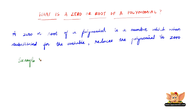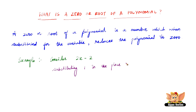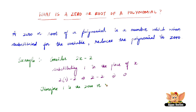For example, let us consider 2x minus 2. In this equation, x is the variable. Substituting 1 in the place of x, 2x minus 2 is reduced to zero. Therefore, 1 is the zero or root of 2x minus 2.